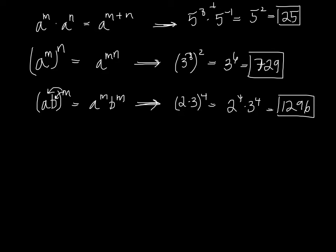Next, we have a to the negative m. This is equivalent to 1 over a to the m, when a is not 0. Once again, with numbers, we have, for example, 7 to the negative 2. The same thing as 1 over 7 squared. And when we move the value to the denominator, it becomes positive, so we have 1 over 49.